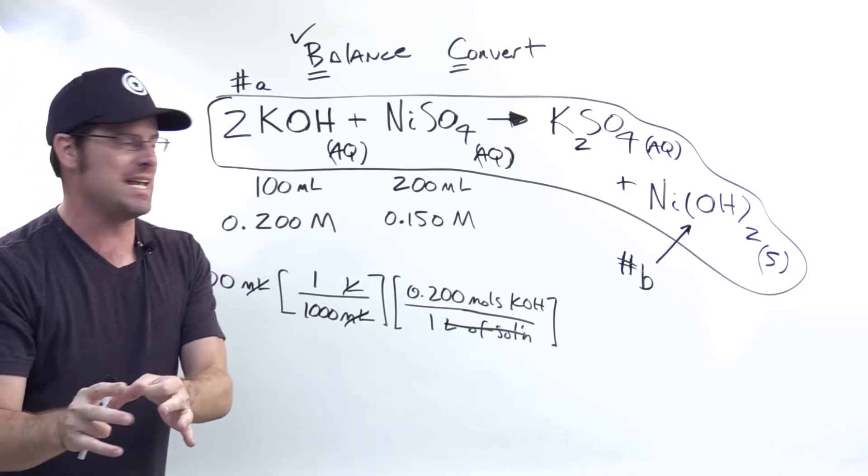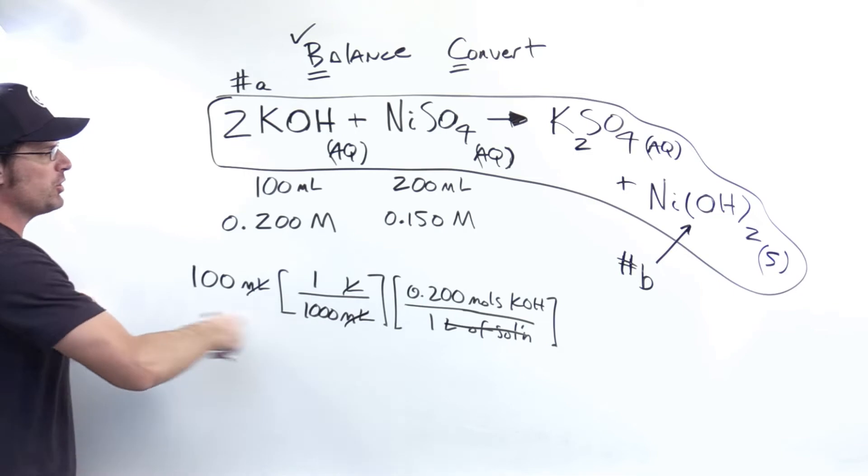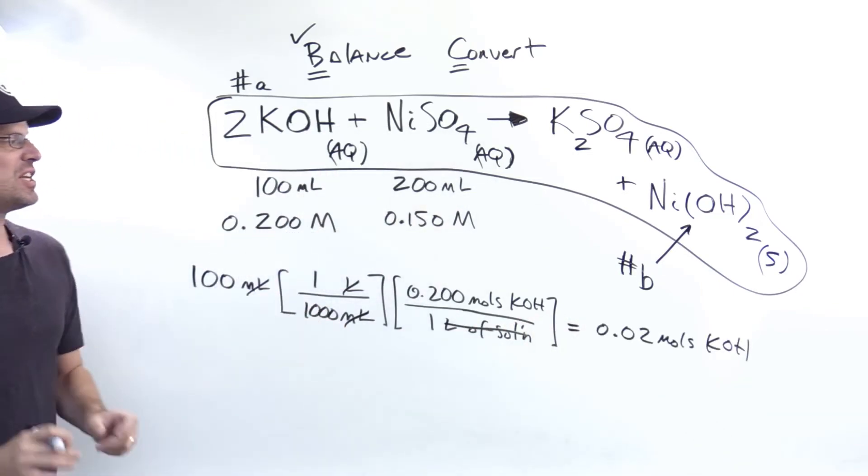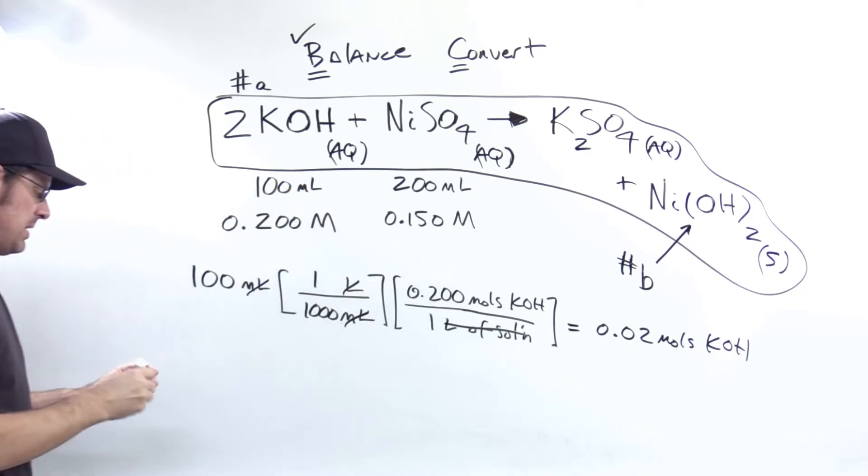Remember, that is what molarity is. It's moles of this substance per liters of that solution. You multiply all this out, and you'll see it comes to 0.02 moles of KOH. So I'm going to replace this information right here with that number.